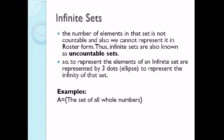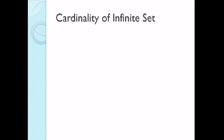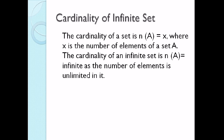Examples of infinite sets: the set of all whole numbers — listed as 1, 2, 3, 4, and then three dots. A set of all points on a line, since there are infinitely many points lying on a given line. The set of leaves on a tree — that is also infinitely many. The cardinality of an infinite set is the number of A equals infinite, as the number of elements is unlimited. We cannot give the cardinality of an infinite set because it is unlimited.